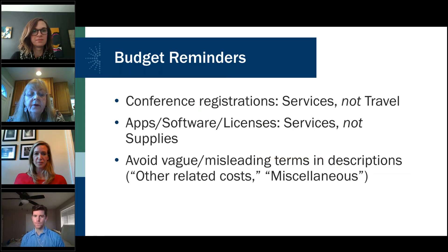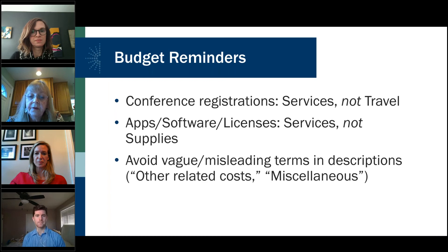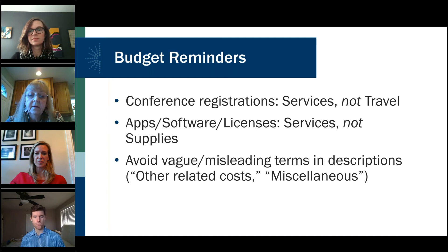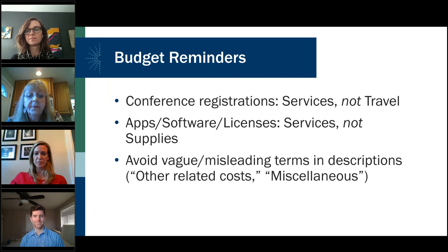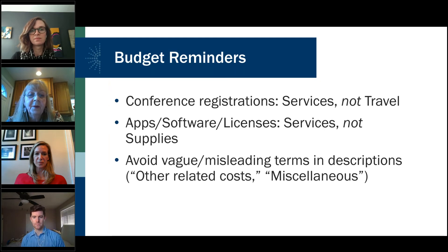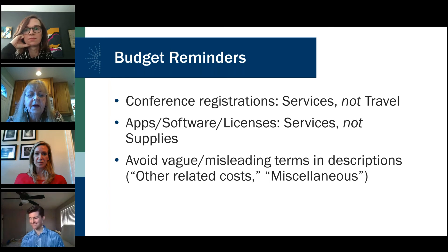A reminder in the budget section: if you've got conference registrations, list those under the services box, not in travel or app software licenses. Avoid vague descriptions — we used to see a lot in the 'other expenses' box. Don't use terminology like 'miscellaneous' because that makes us question what did you buy.